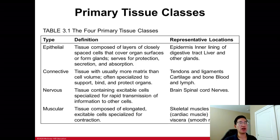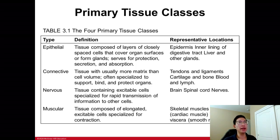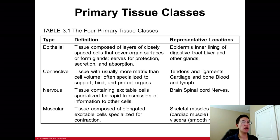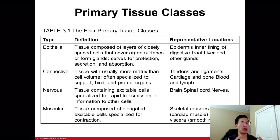Epithelial tissue is found all over the body from head to toe — in glands internally and also on your skin. Connective tissue is used for support: tendons, ligaments, bones, blood cells — all structures that provide structural support.